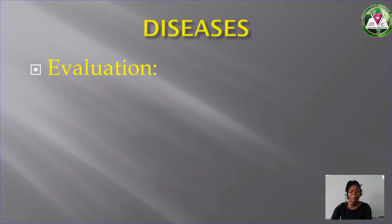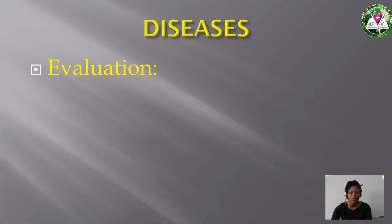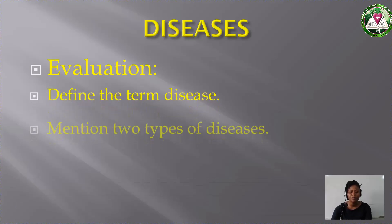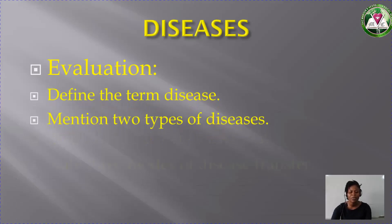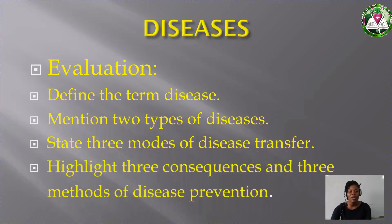I believe you understood this topic — diseases. We started by defining disease, then mentioned the causative organisms. We also mentioned the two major types of diseases and gave examples. Then we talked about the ways diseases can be contracted and how we can prevent them. Now I want you to try this: number one, define the term disease; number two, mention two types of diseases; three, state three modes of disease transfer; then highlight three consequences and three modes of disease prevention. Thank you and God bless you. Stay safe.